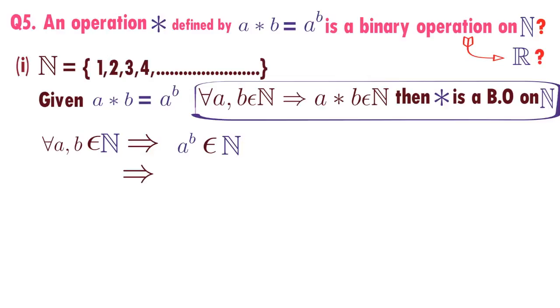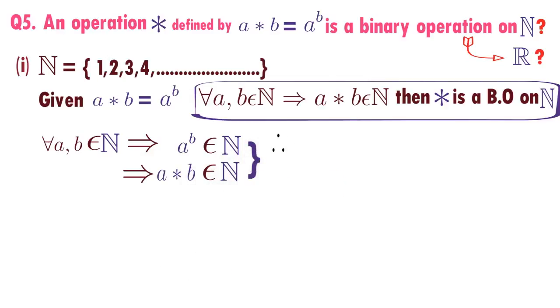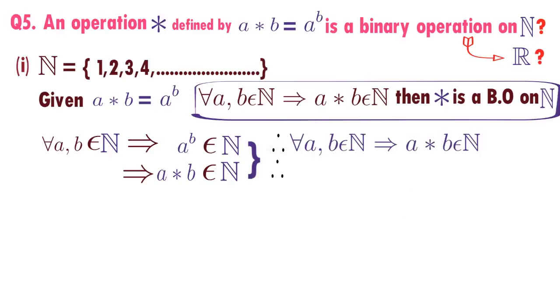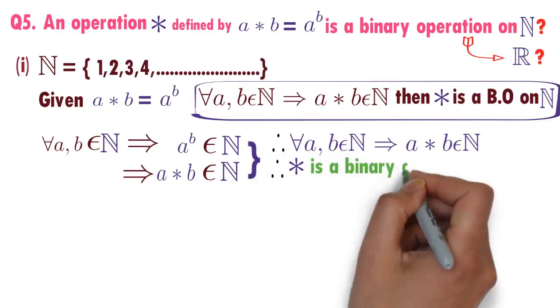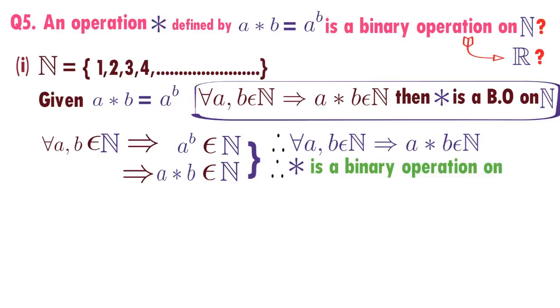What is A power B? A star B is defined as A power B. So A power B is nothing but A star B. A star B is a natural number. So what we have proved here, for every A comma B belongs to N implies A star B belongs to N. Therefore, star is a binary operation on set of natural numbers.